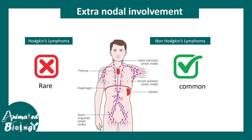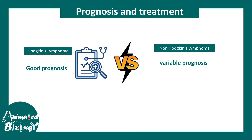When it comes to extranodal involvement, non-Hodgkin's lymphoma shows extensive involvement of extranodal tissues like the thymus, spleen, and sometimes even bone marrow. Whereas Hodgkin's lymphoma is mostly confined to lymph nodes, though in advanced cases it might also have extranodal involvement.